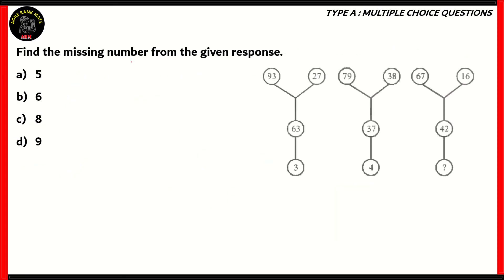Next question. Find the missing number from the given response. So, we have this particular diagram, which represents 93, 27, 63, as well as 3, and the second diagram shows 79, 38, 37, as well as 4. Now, in the third diagram, the number at the bottom is missing. We need to find out what number that is. But in order to find out what number that is, we need to find out the relation between the four numbers in this particular diagram.